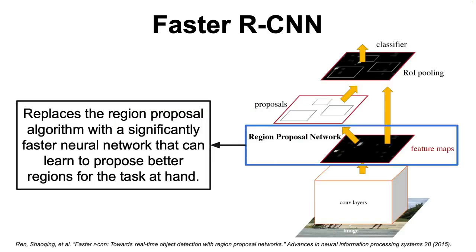The Faster R-CNN model mitigates this limitation by introducing the Region Proposal Network, which, as the name suggests, replaces the region proposal algorithm in R-CNN and Fast R-CNN with a significantly faster neural network that can learn to generate better regions for the task at hand.